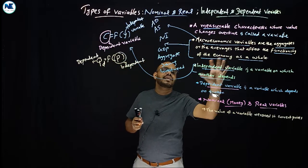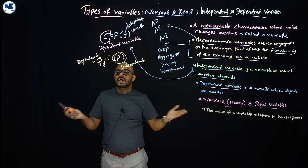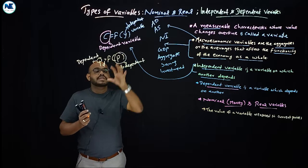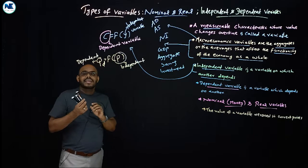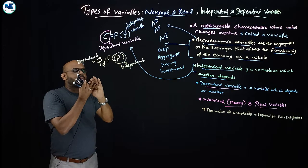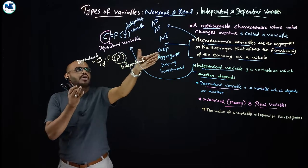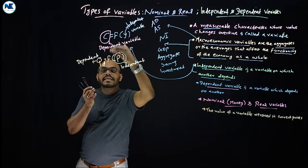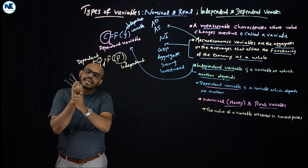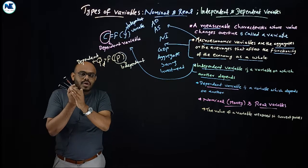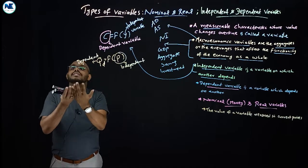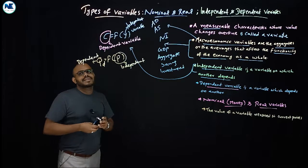So those are independent and dependent variables. If you get a six-mark paragraph-type question asking you to explain the different types of variables, you should define variable, then macroeconomic variables with examples, then cover independent and dependent variables, nominal and real variables, stocks and flows, and endogenous and exogenous variables.